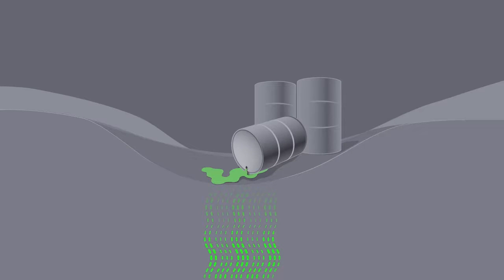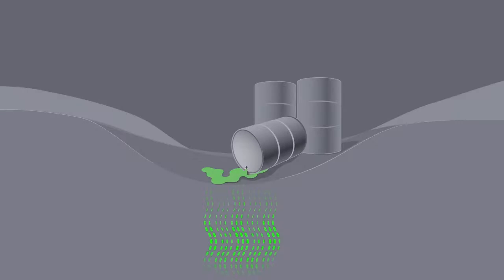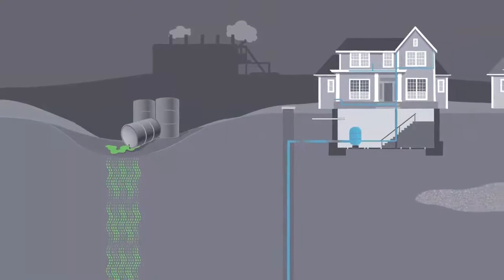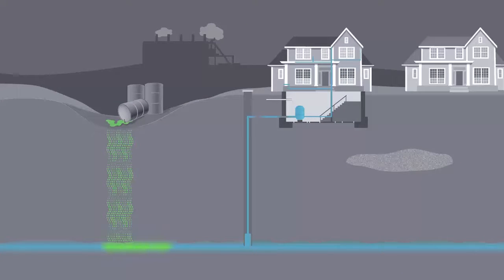TCE in soil may also leak into groundwater. TCE that is spilled on the ground can travel down through the soil into groundwater. It can also leach or seep out of poorly constructed landfills and disposal sites. TCE can remain in groundwater for a long time.